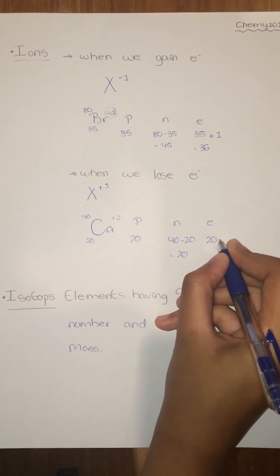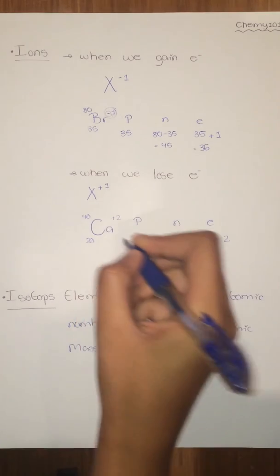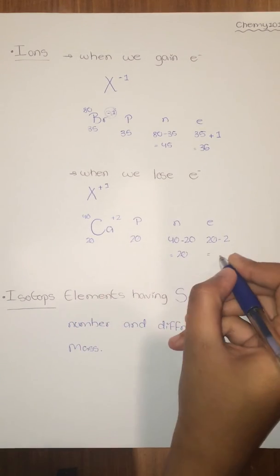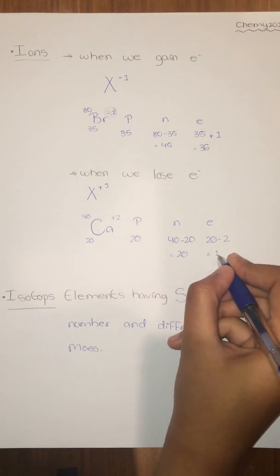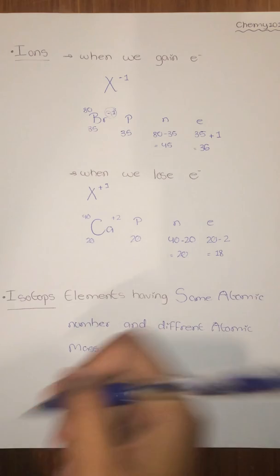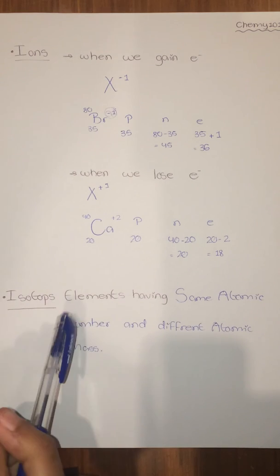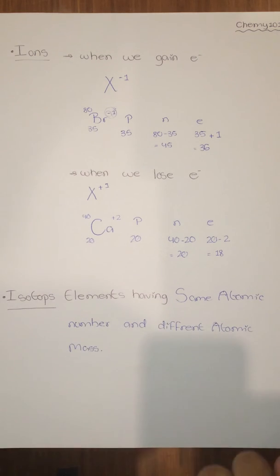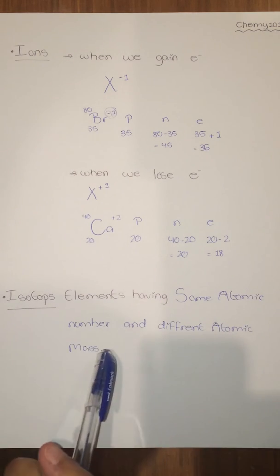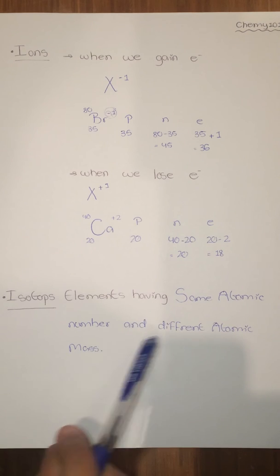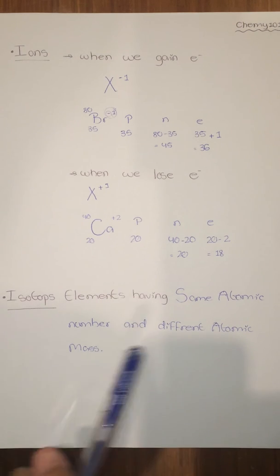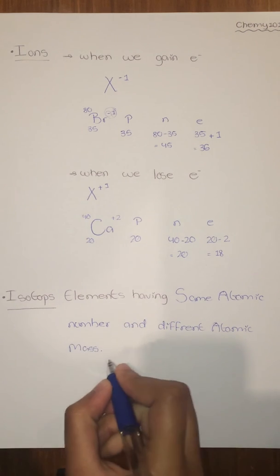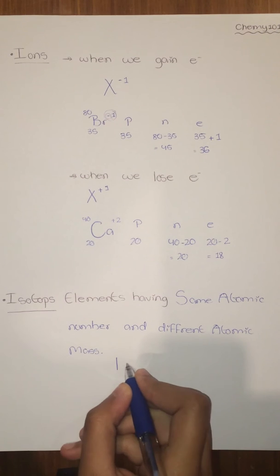The electrons will equal 20 minus 2 — minus the electrons lost — so it will equal 18. Now we have isotopes. Isotopes are elements having the same atomic number and different atomic mass.